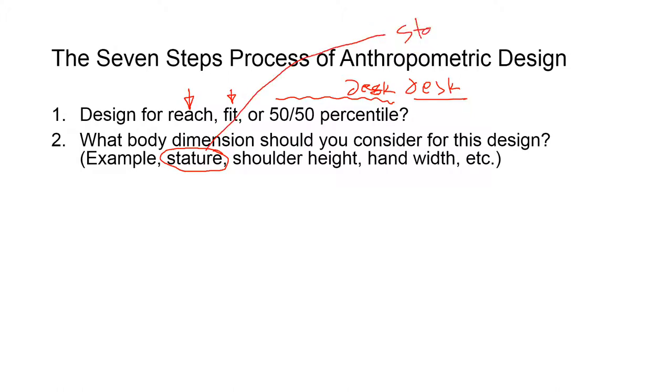This is called standing dimension. The CDC, Center for Disease Control, has started to use standing dimension rather than stature. However, if you're watching this video you're probably into ergonomics, so make sure you know that the standing height is called stature. If you're designing a door height, then stature height is the appropriate dimension.